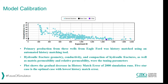This slide covers model calibration. The primary production from the three wells in the Eagleford was history matched using CMOST. The tuning parameters were hydraulic fracture geometry, conductivity, compaction of the hydraulic fractures, matrix permeability, and relative permeability. The plot shows the gradual decrease in history match error over 2000 simulation runs — starting above 40% and reducing to approximately 6% for the best case.